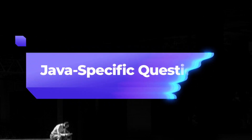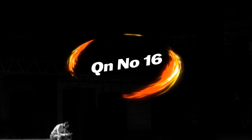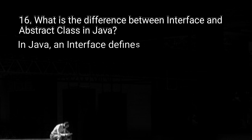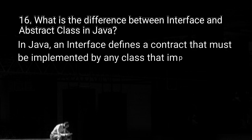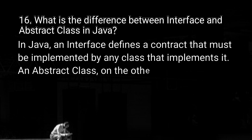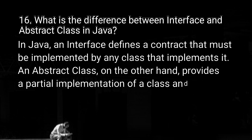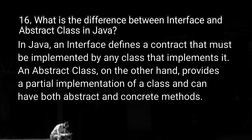Moving on to the next topic: Java specific questions. Question number 16: what is the difference between an interface and an abstract class in Java? In Java, an interface defines a contract that must be implemented by any class that implements it. An abstract class, on the other hand, provides a partial implementation of a class and can have both abstract and concrete methods.